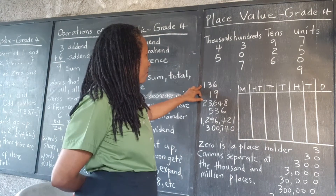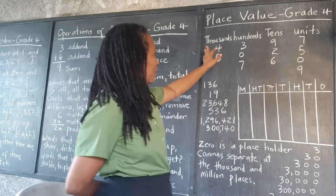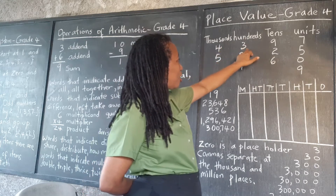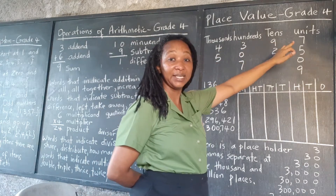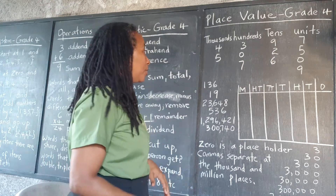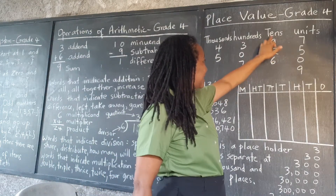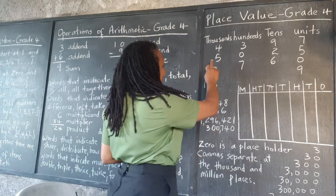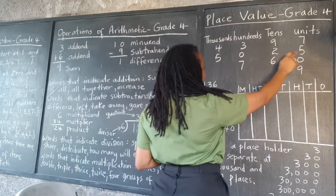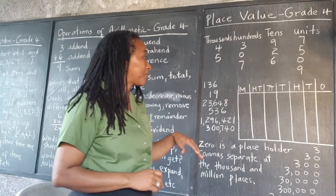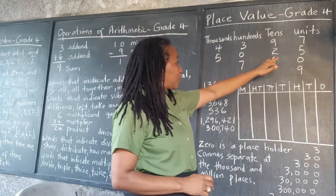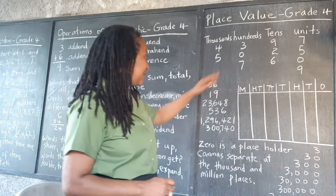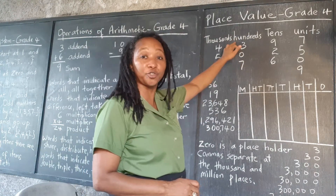Let's start with four thousand three hundred and ninety-seven. So ninety-seven is nine tens and seven units, or seven ones. Next, five thousand and twenty-five. You notice in five thousand and twenty-five we have a zero holding the place because there are no hundreds.